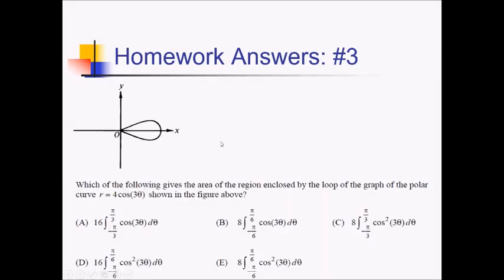For this problem we want the area of the region enclosed by the loop of the graph, which is r equals 4 cosine of 3 theta. We need the limits of integration for our formula: integral from A to B of 1 half r squared d theta. To figure out what angle this starts and ends at, I notice that I'm starting and ending at the pole, at the origin. So I want to figure out when r equals 0, when this distance from the origin is 0. I'll start by setting this equal to 0 and solving.